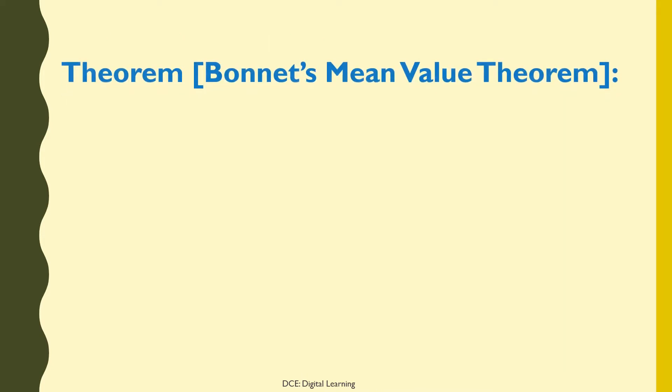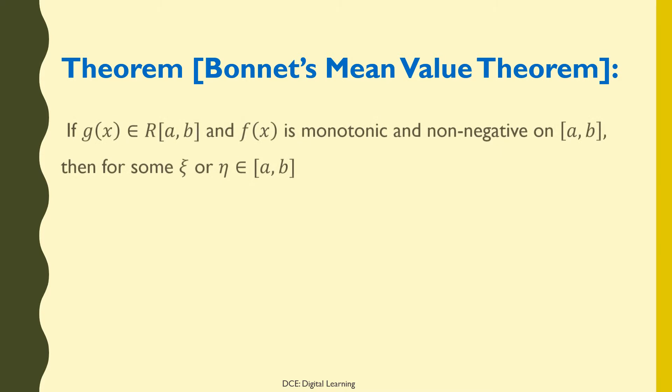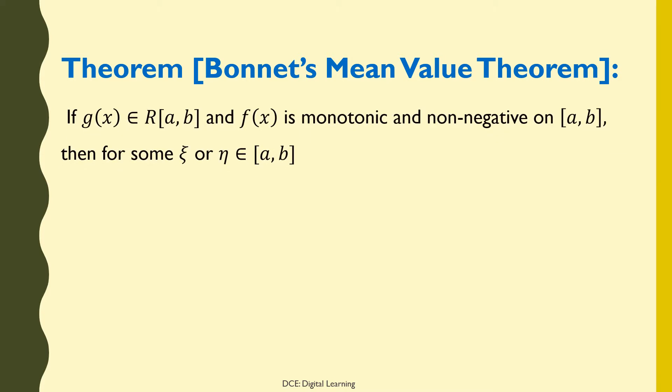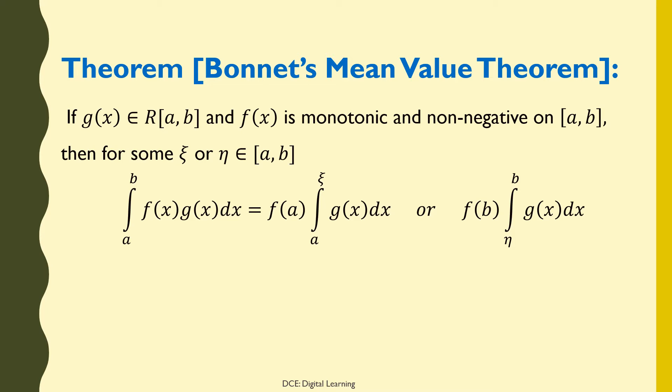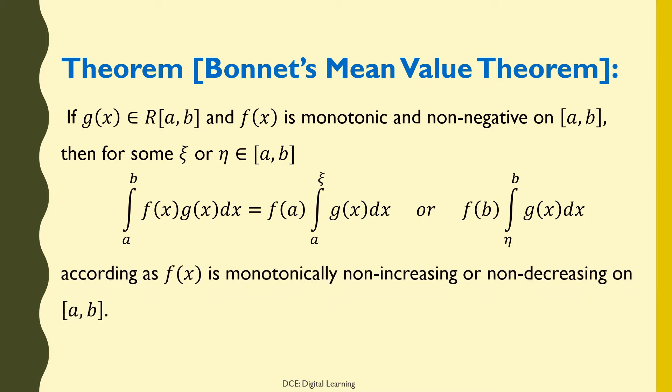Let us recall Bonnet's Mean Value Theorem first. If g(x) belongs to Riemann integrable functions on the closed interval [a, b], and f(x) is monotonic and non-negative on [a, b], then for some η belonging to the closed interval [a, b], the integral of f(x)·g(x) dx from a to b equals f(a) times the integral of g(x) dx from a to η, or f(b) times the integral of g(x) dx from η to b, according as f(x) is monotonically non-increasing or non-decreasing on [a, b].